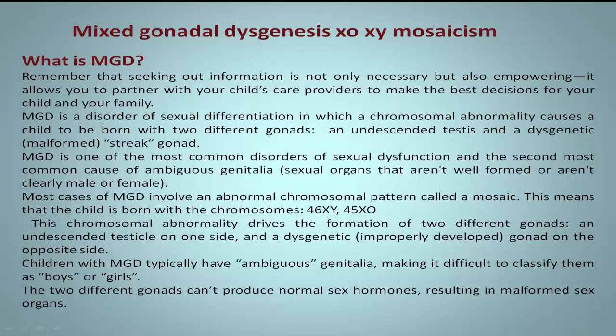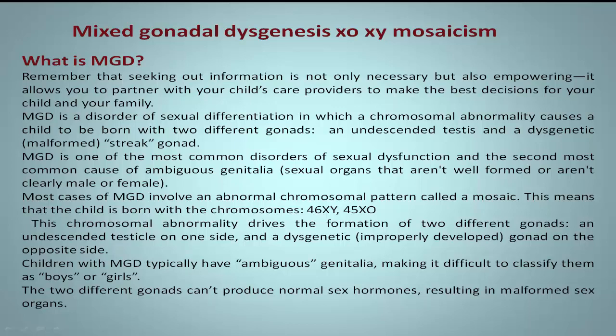Children with MGD typically have ambiguous genitalia, making it difficult to classify them as boys or girls. The two different gonads can't produce normal sex hormones, resulting in malformed sex organs.